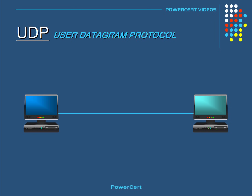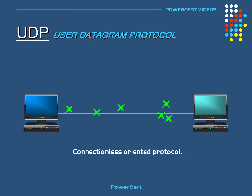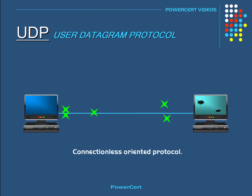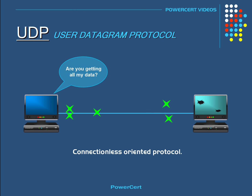UDP is very similar to TCP. UDP is also for sending and receiving data, but the main difference is that UDP is connectionless. This means that it does not establish a session and it does not guarantee data delivery. So when a computer sends their data, it doesn't really care if the data is received at the other end.